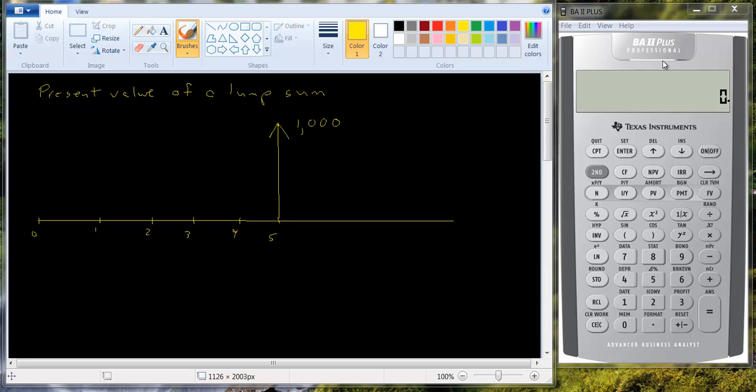Later in the course we'll look at how we compute the present value for a series of cash flows, but right now let's just start with one. And I've already drawn a little picture here, I've drawn this time cash flow diagram. I should be more specific here and write in time right here.